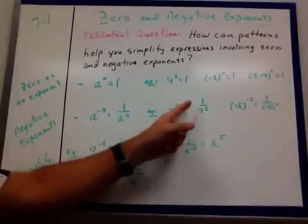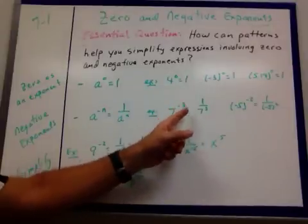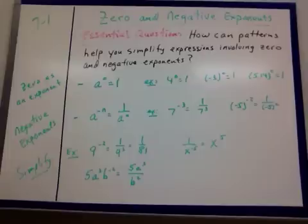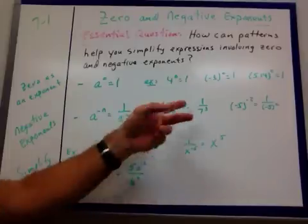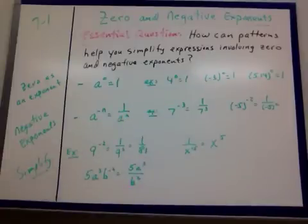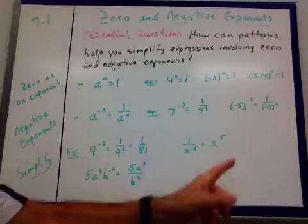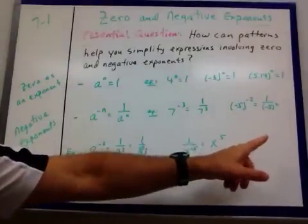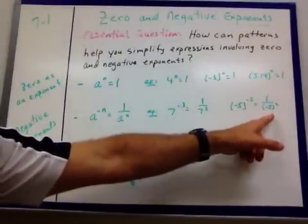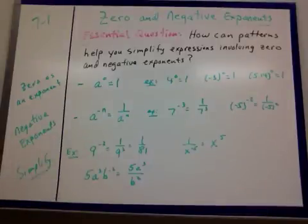Like 7 to the negative 3 becomes 1 over 7 to the 3rd. Just flip it and change the sign on the exponent. Don't change the number, just change the sign on the exponent. Negative 5 to the negative 2nd power becomes 1 over negative 5 to the positive 2nd power. So that's what we do - we flip it. And you'll see in another example how we can do it if it's in the denominator.